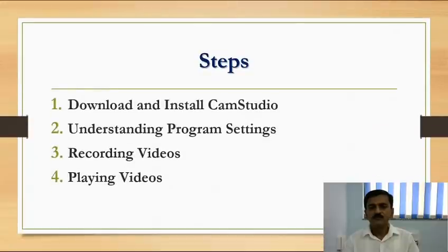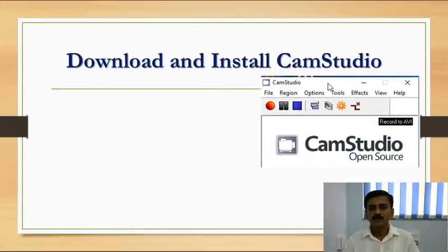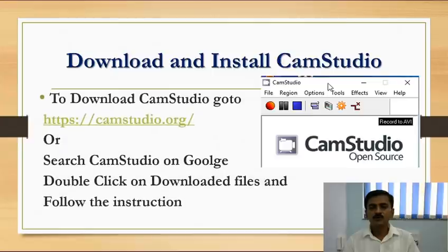While using CamStudio you have to follow some steps: first you have to download and install CamStudio, then you have to understand the different program settings, then you can record videos, and finally you can play the videos. To download and install CamStudio, you have to browse camstudio.org or you can search for CamStudio on Google and go to camstudio.org. Then you can download CamStudio and install it by double-clicking on the installer file.